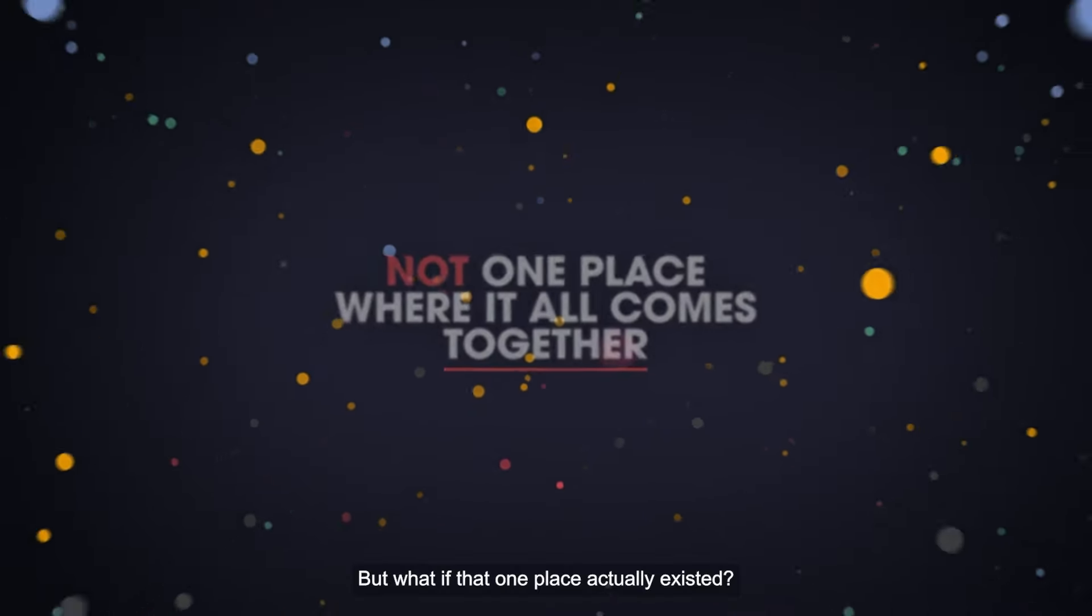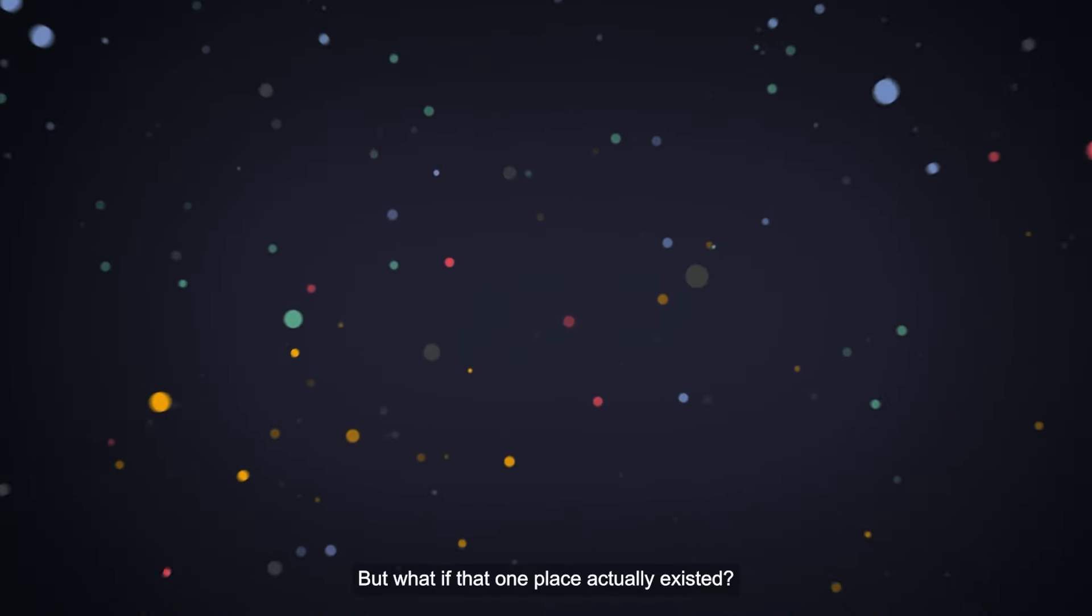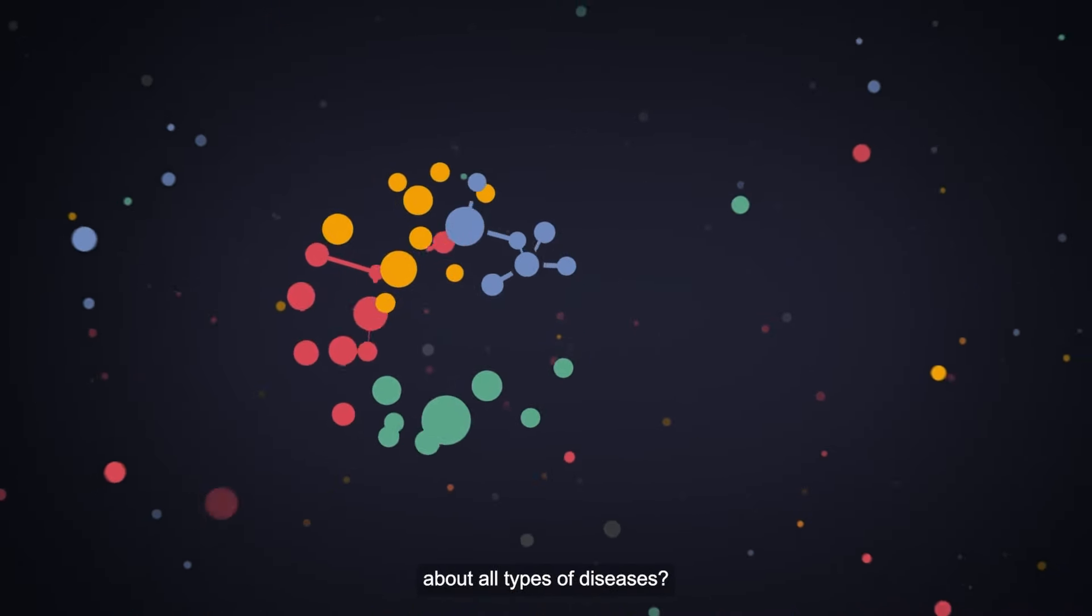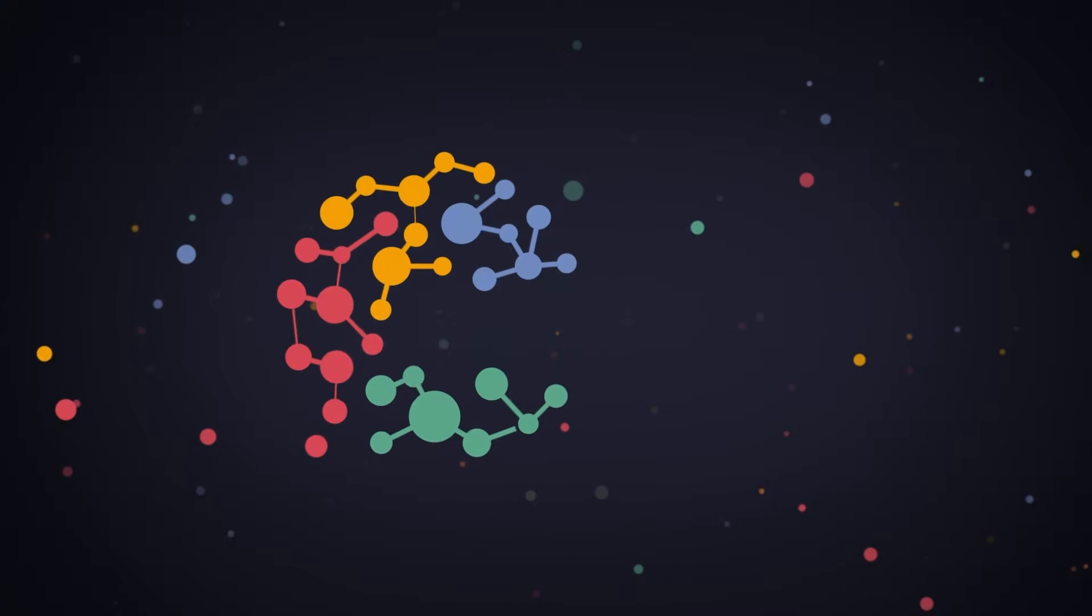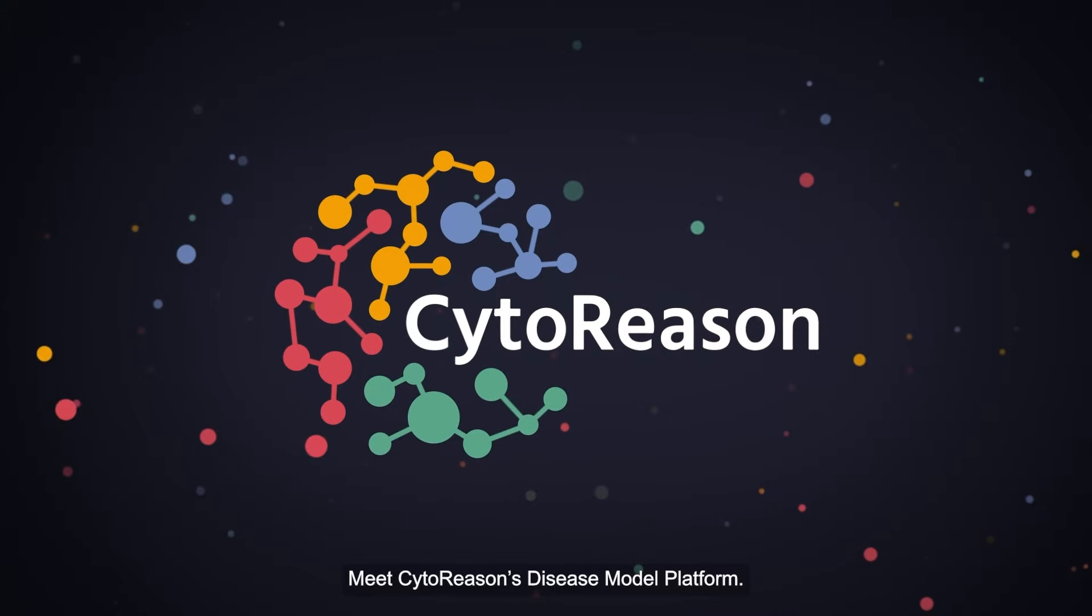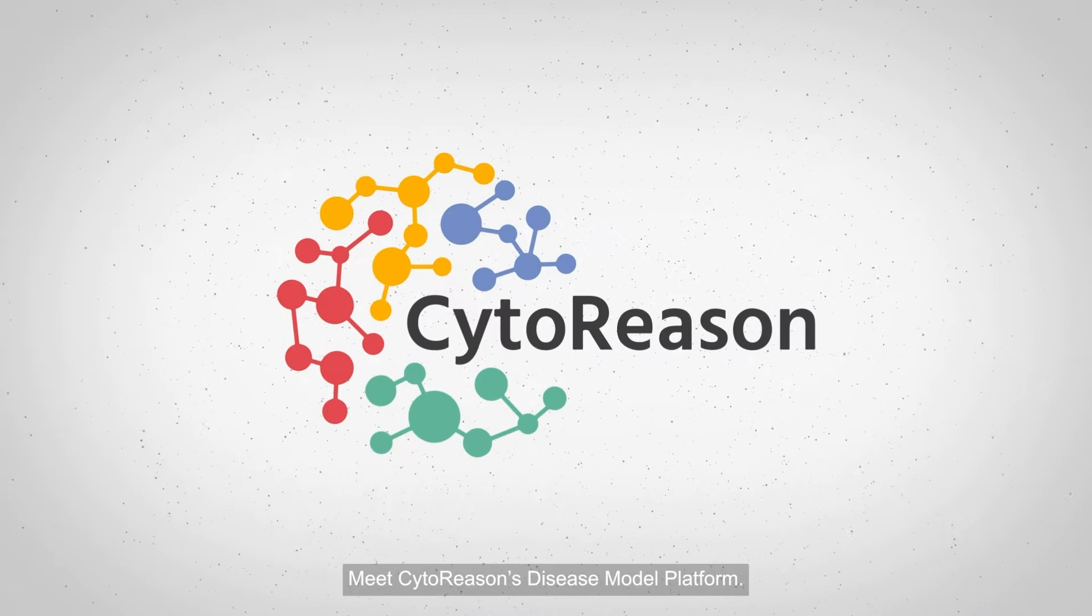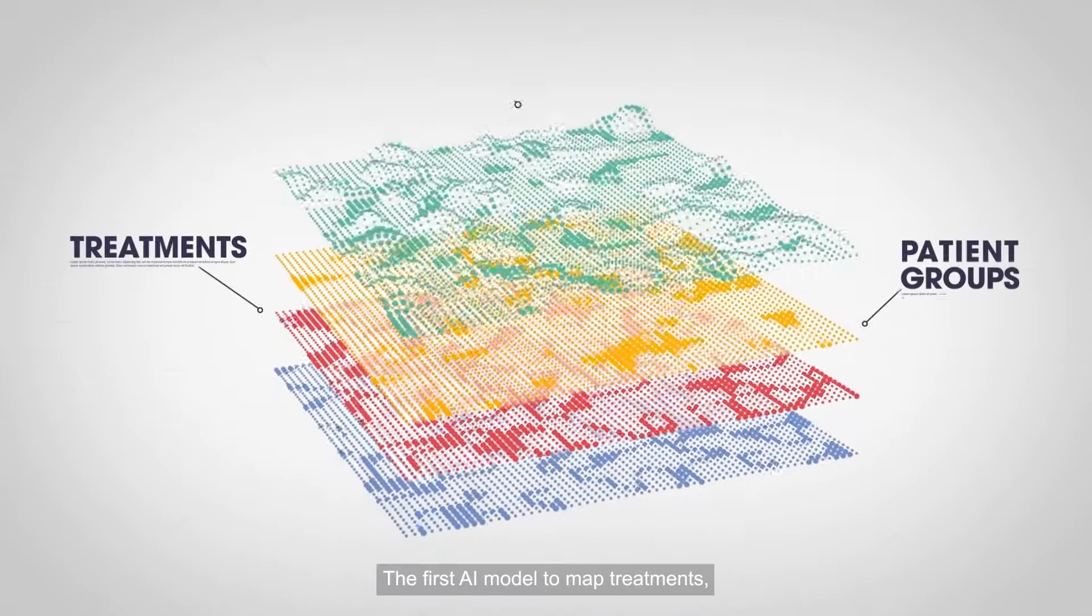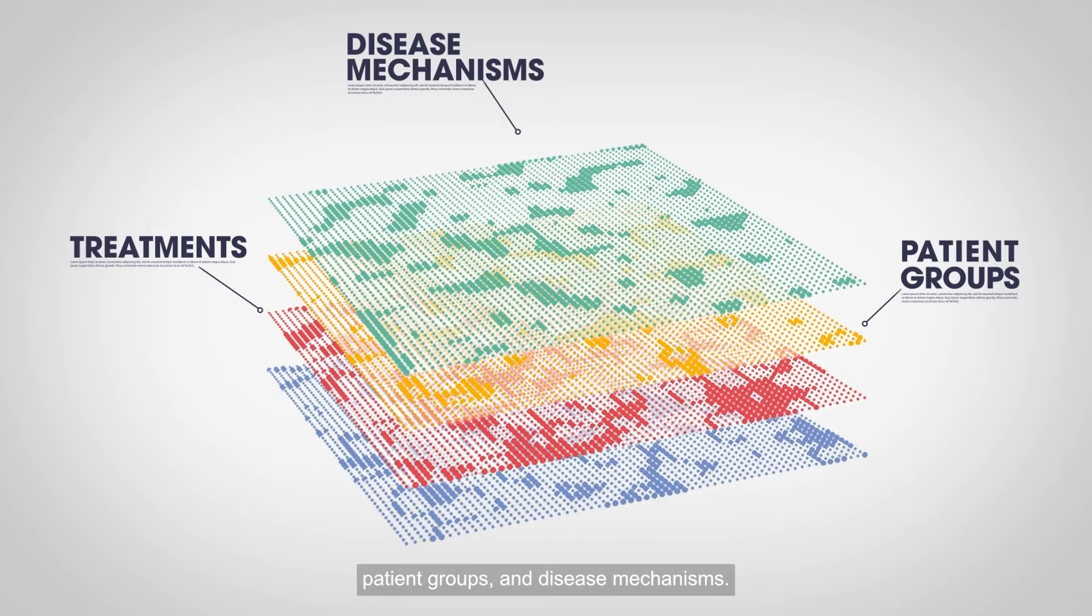But what if that one place actually existed? What if you had a platform that could integrate all types of data about all types of diseases? Meet CytoReason's disease model platform. The first AI model to map treatments, patient groups, and disease mechanisms.